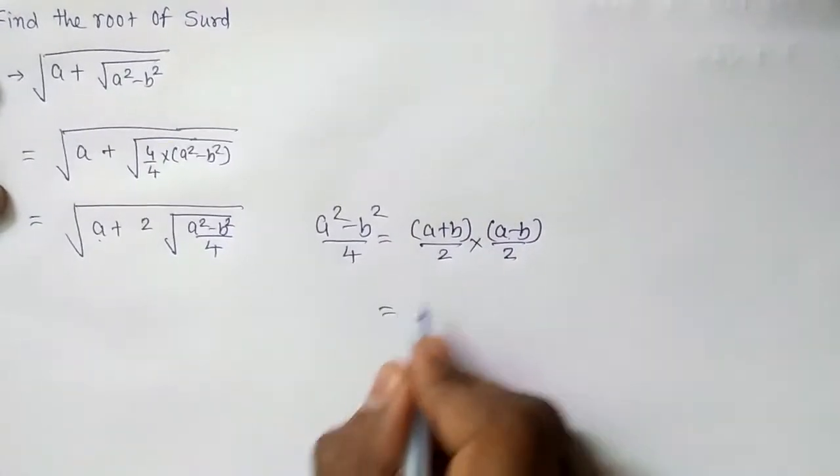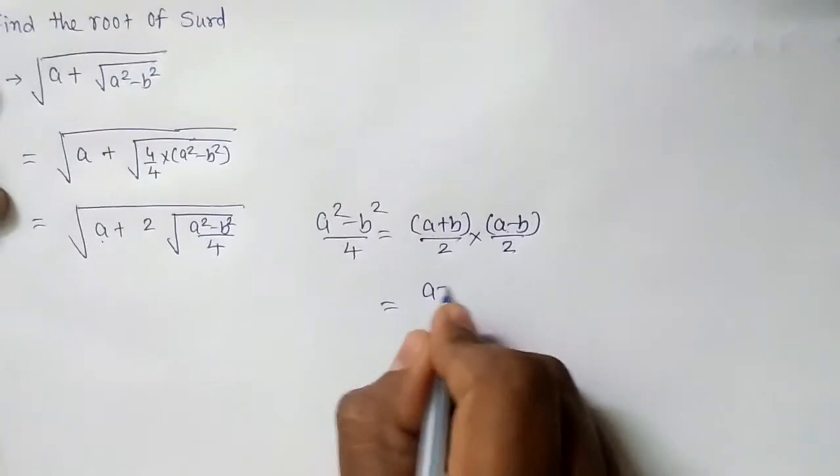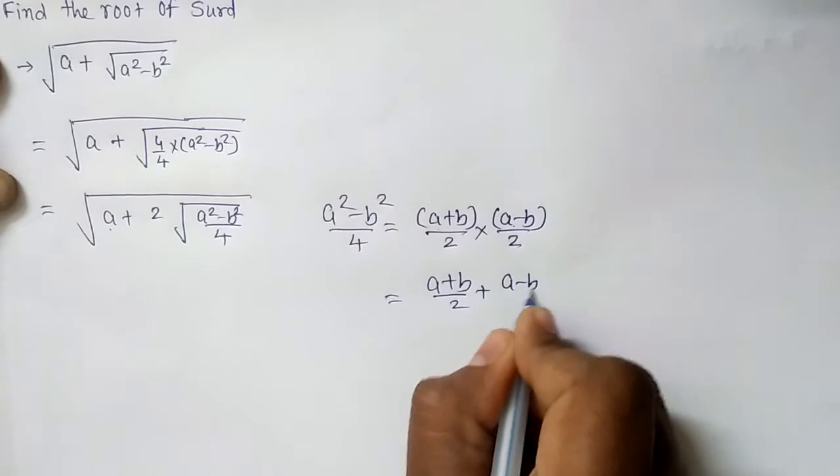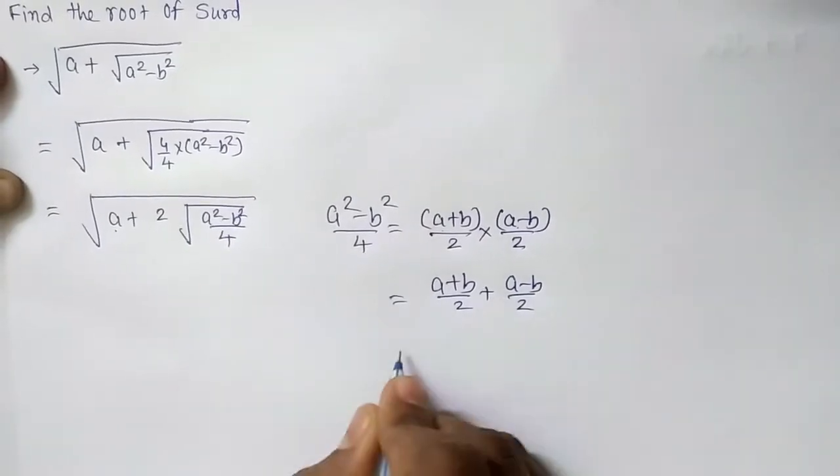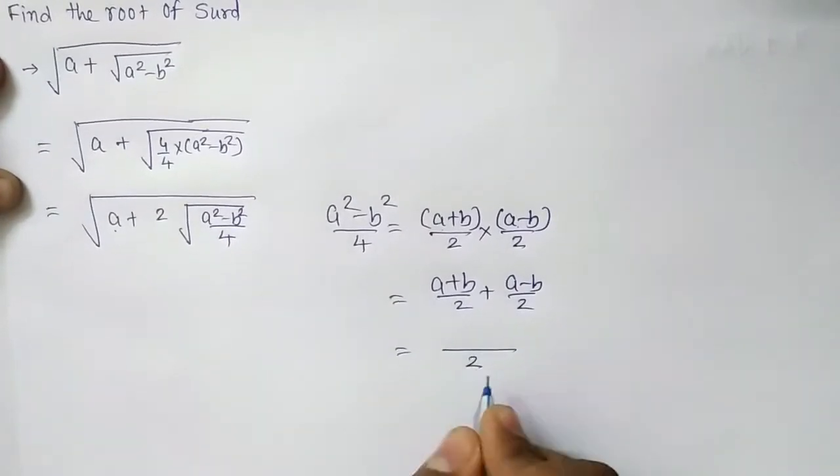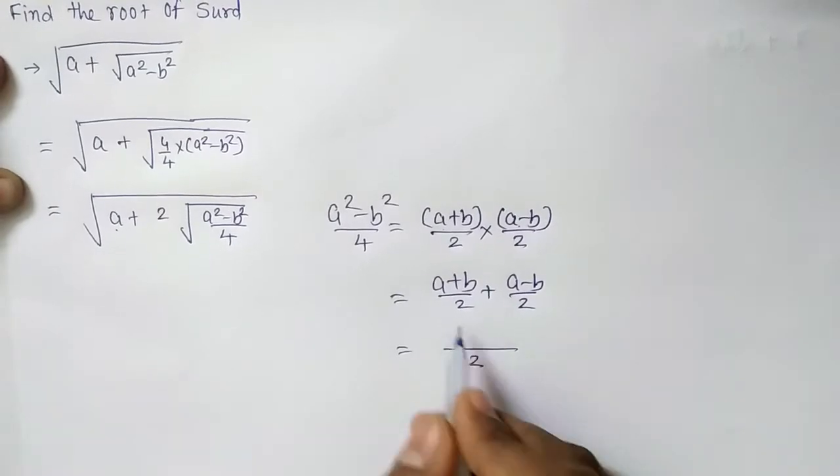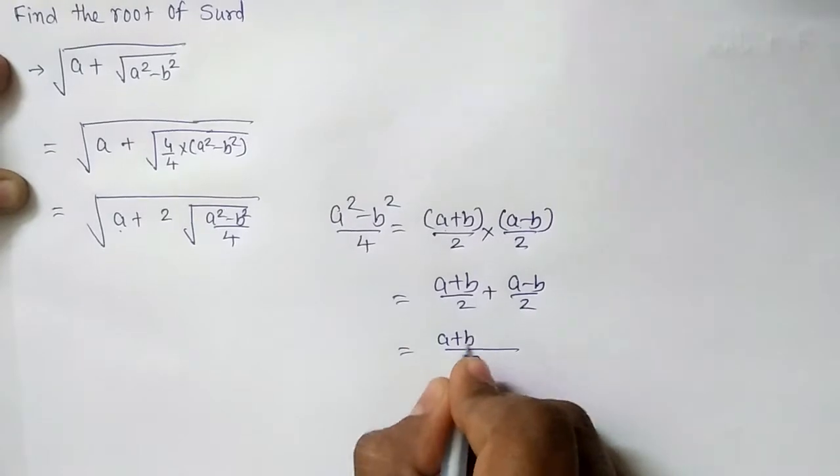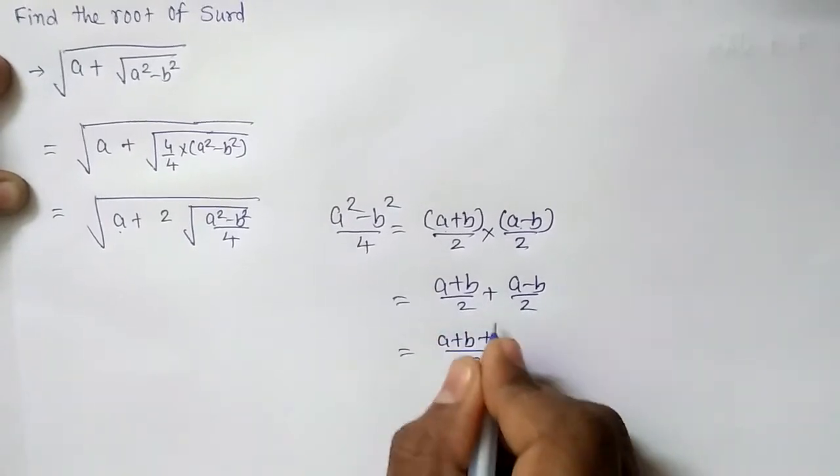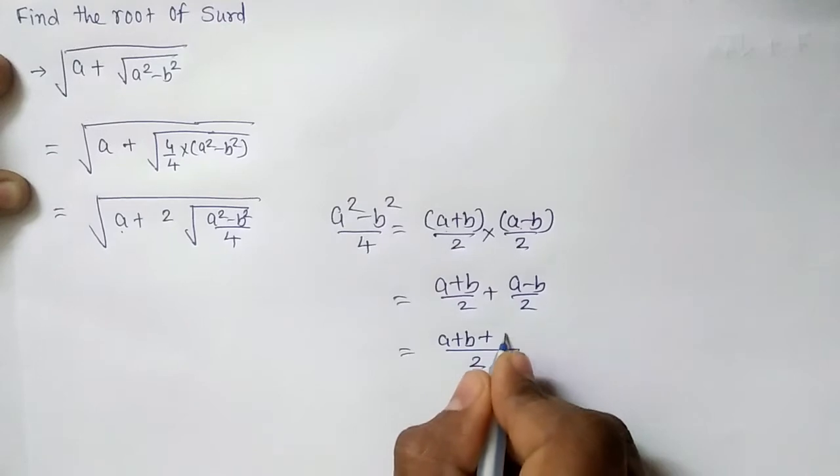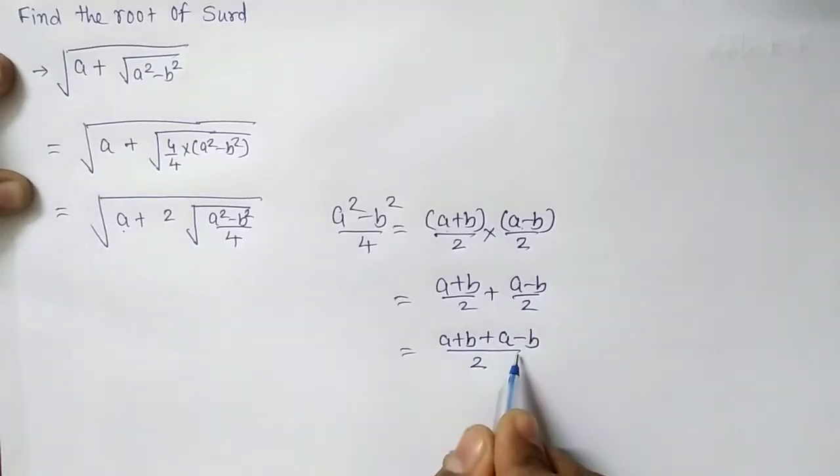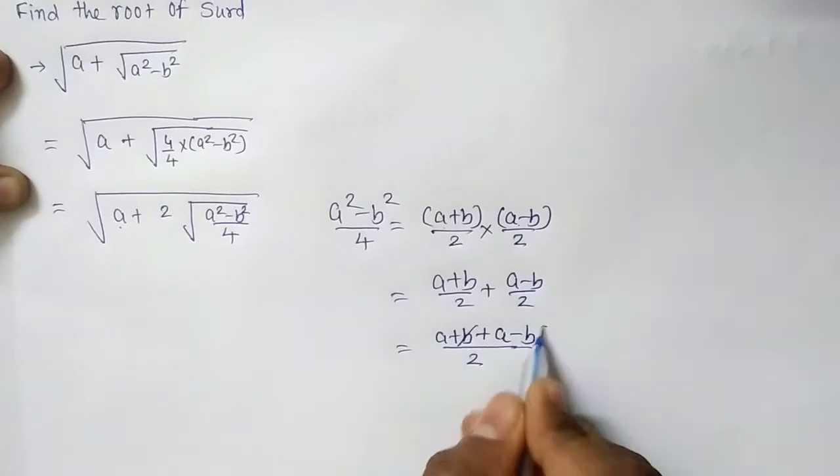Let us try to do the total of both of these factors: a plus b by 2 plus a minus b by 2. You should take the LCM, which is 2. So this will be simply added. a plus b plus it is plus, so there will be no change in the sign. a minus b.